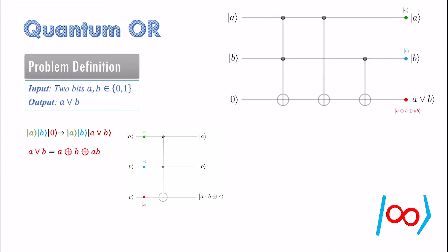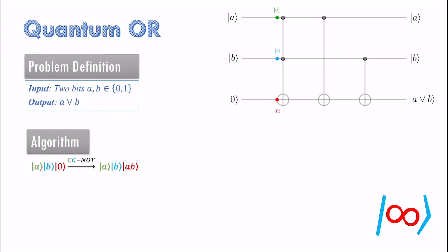CC NOT gate can be used to get the multiplication term and CNOT gates can be used to get the addition terms. We first apply CC NOT gate on the target bit with input bits A, B as controls. Then we successively apply CNOT gates on it using first A as control and then B as control.